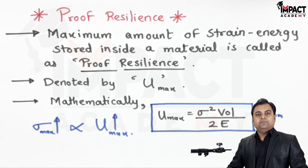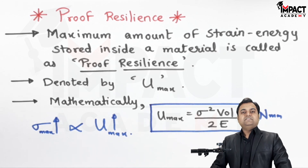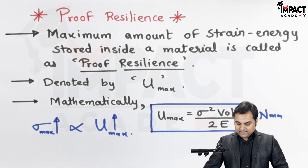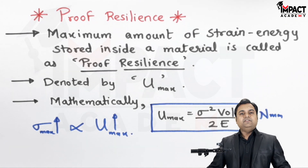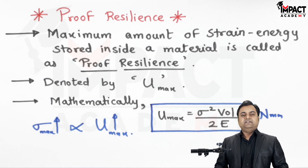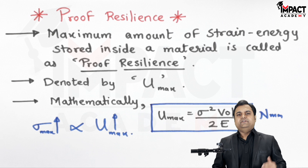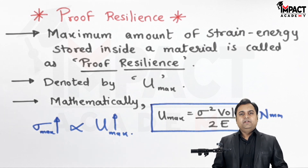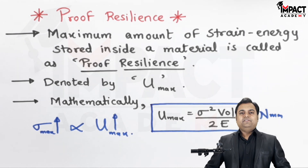In short, proof resilience means the maximum strain energy stored inside the material. It can be seen in the case of springs, and also in the case of ropes attached to a heavy load — when that load suddenly stops, strain energy is stored inside the rope. So this was regarding proof resilience.